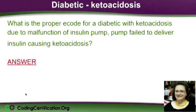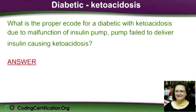I really have a thing for diabetes now — I have to deal with so much with that, that I'm particularly enjoying talking about it. The question had come in, and the reason I think this question came in is because it was in the Buck textbook and it's in the AAPC textbook that we use now as well. What is the proper code for a diabetic with ketoacidosis due to malfunction of insulin pump? Pump failed to deliver insulin, causing ketoacidosis.